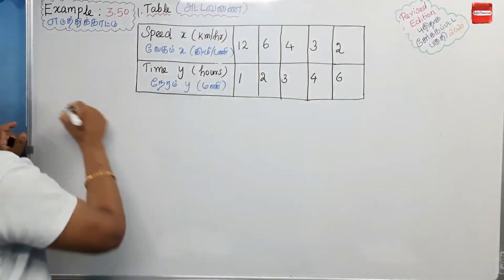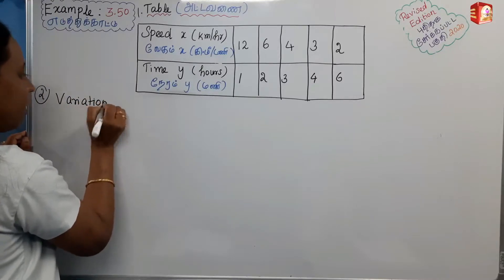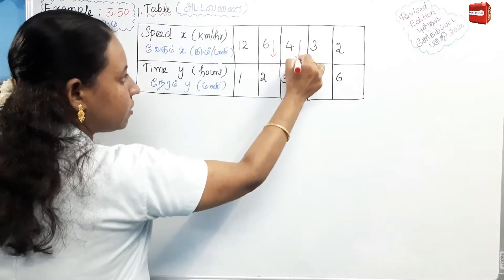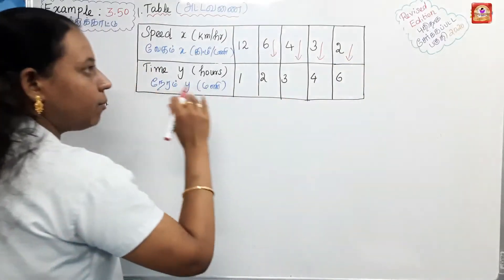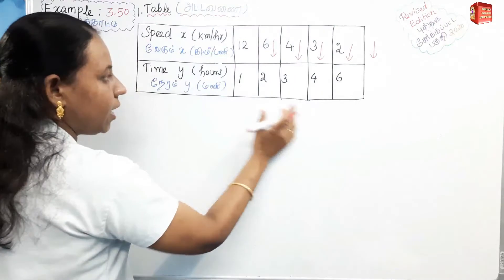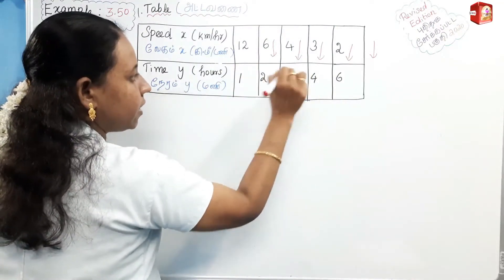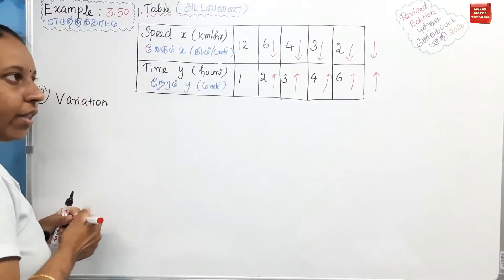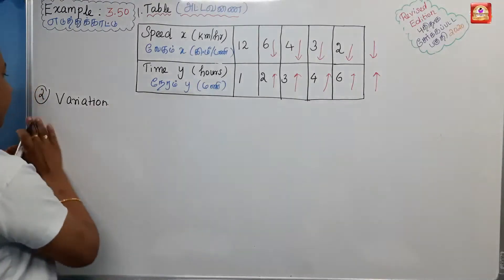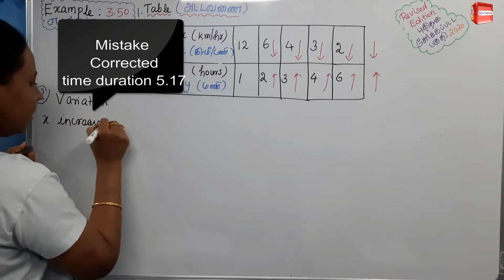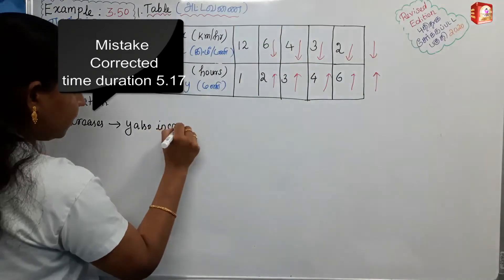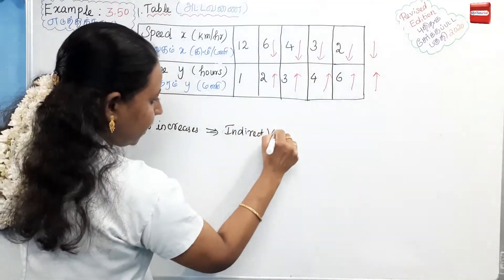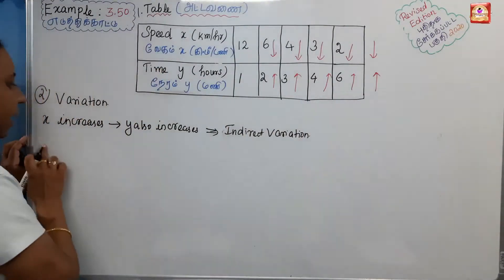Let's go to the next step — variation. As speed values on the x-axis decrease from 12 to 6, 6 to 4, 4 to 3, and 3 to 2, the time values on the y-axis increase from 1 to 2, 2 to 3, 3 to 4, and 4 to 6. So as x decreases, y increases — this is indirect variation. In Tamil, when x decreases, y increases — that confirms this is an indirect variation.